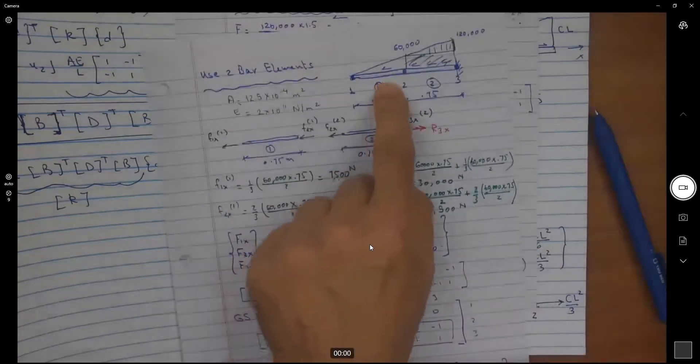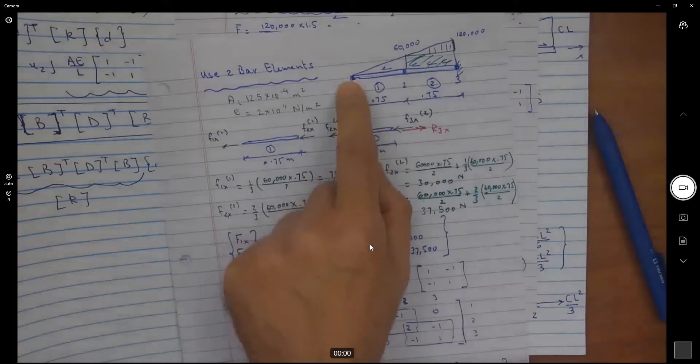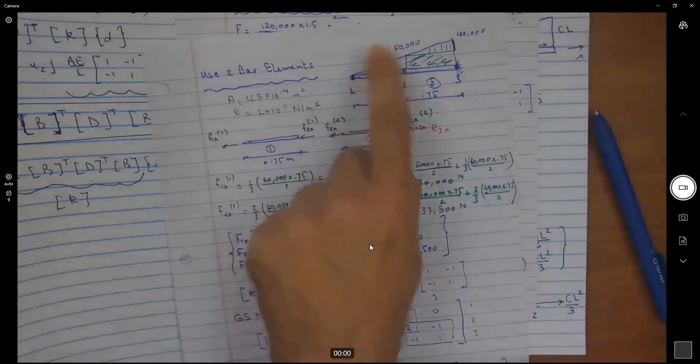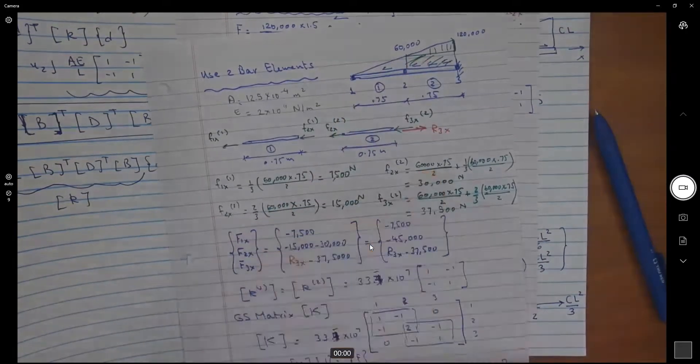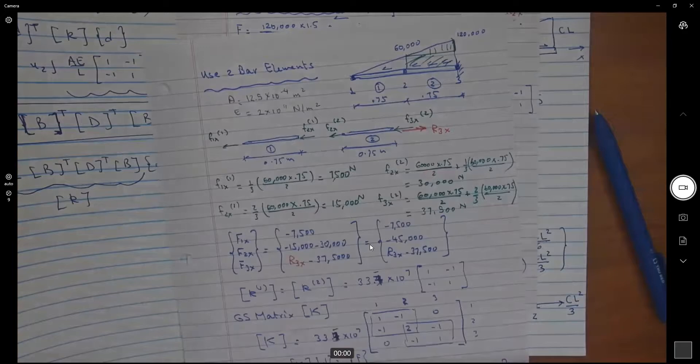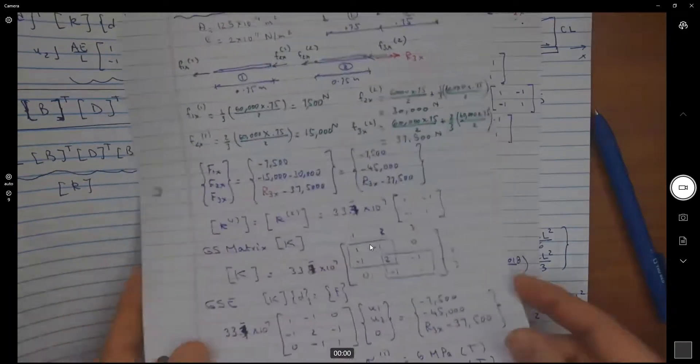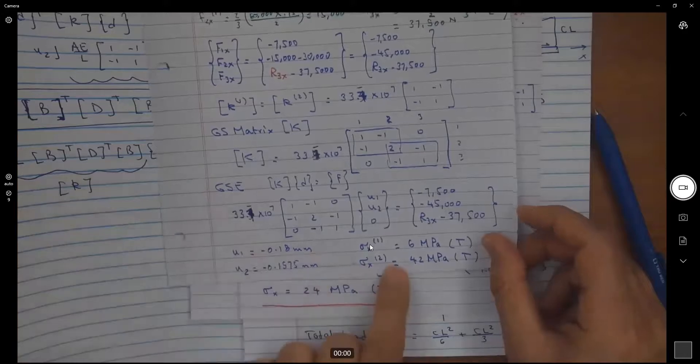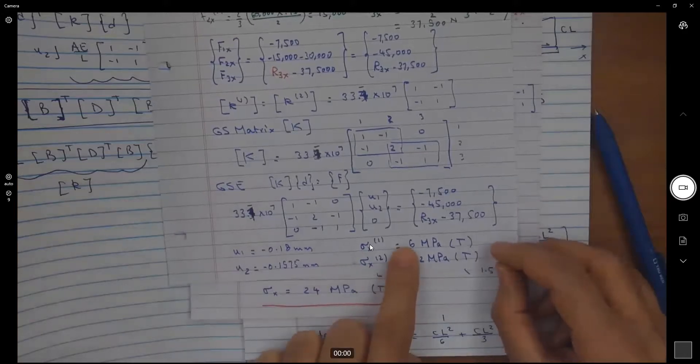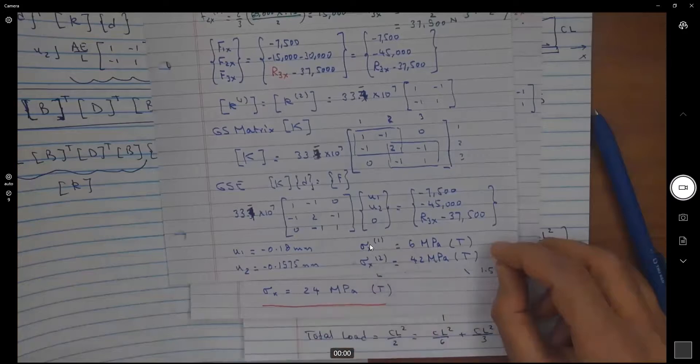Now, I use these two elements to find the stresses in element one and element two. My first approach told me I have the same stress throughout, and we found it to be 24 megapascals. Look here what I get now. In element one, I'm only seeing 6 megapascals. And element two, I'm seeing 42 megapascals.